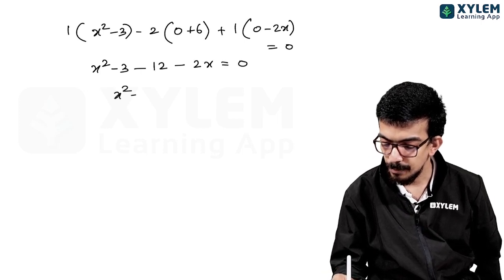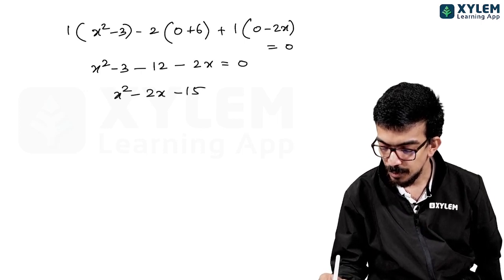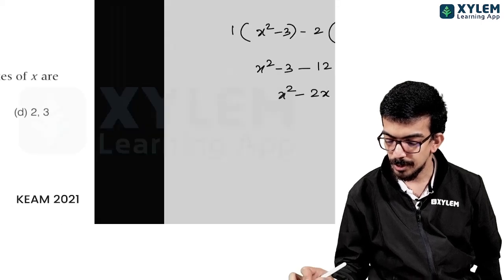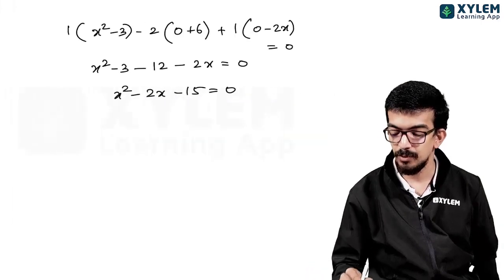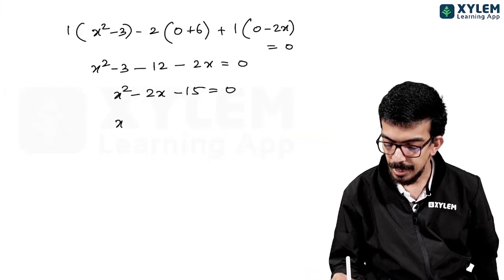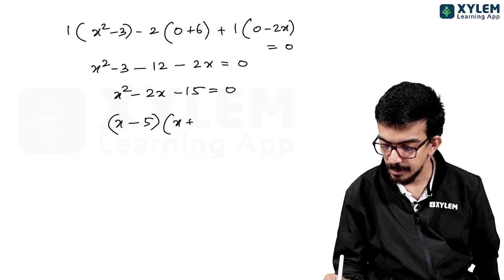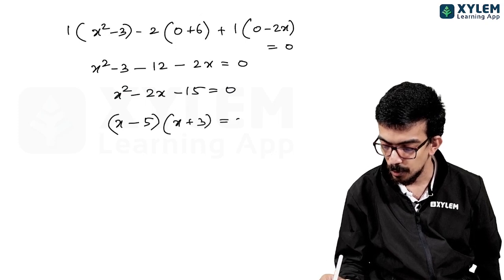This gives x² - 2x - 15 = 0, which factors as (x - 5)(x + 3) = 0. So x equals 5 or x equals -3.